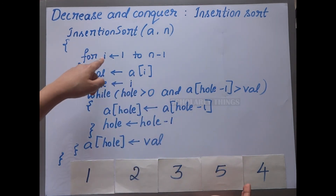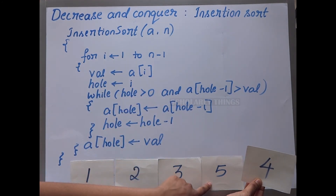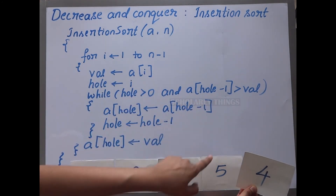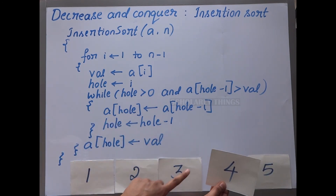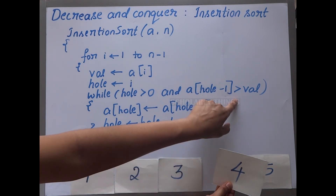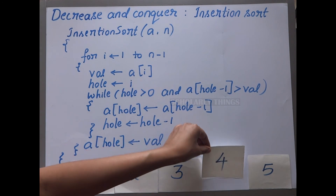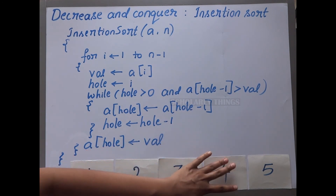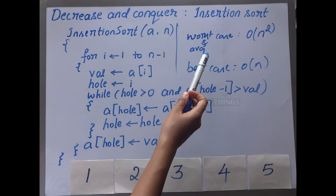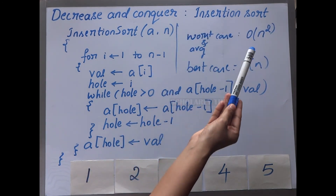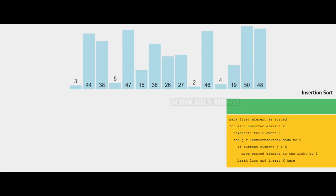Now 1, 2, 3, and 5 are sorted. We go to the next iteration at position 4. We take out value 4 and compare it with 5 — yes, 5 is greater, so we shift. Next we compare with 3 — 3 is not greater, so the condition fails. We exit the while loop and assign 4 to the hole. The array is now fully sorted. The worst and average case time complexity is O(n²); the best case is O(n).